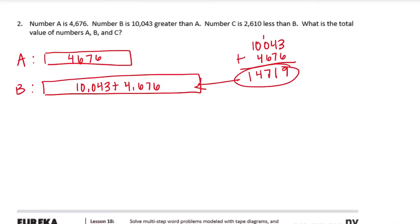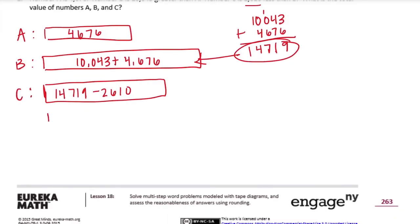And number C is 2,610 less than B. So now that we already know what B was, it's saying it's less, so let me make this smaller. So it is 14,719 minus 2,610. So let's figure out what C is. 9 minus 0 is 9. 1 minus 1 is 0. 7 minus 6 is 1. 4 minus 2 is 2. 1 minus 0 is 1. So C is equal to 12,109.